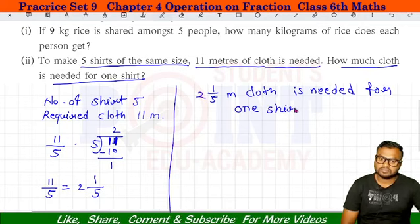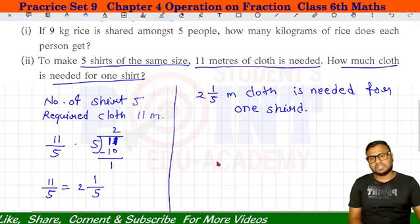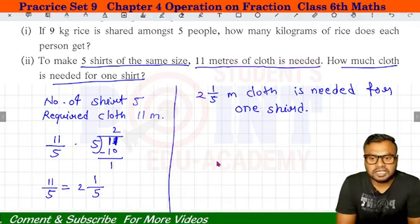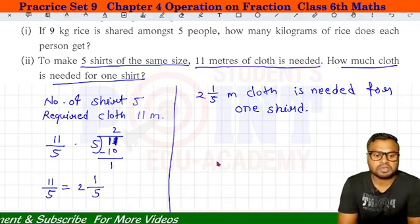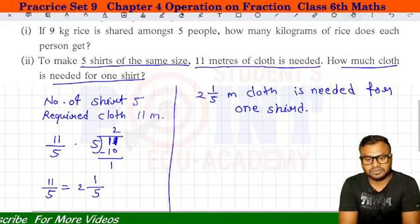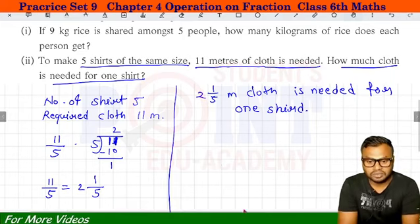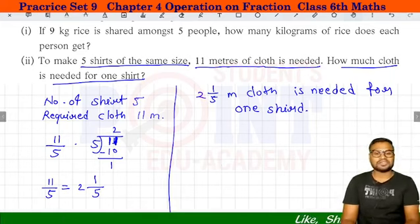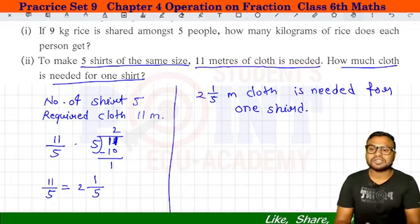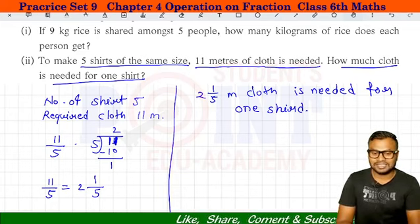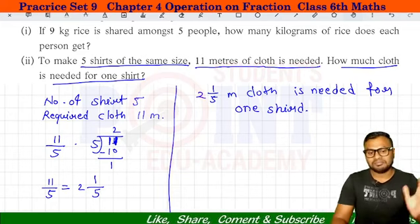Answer: 2 and 1 by 5 meter cloth is needed for one shirt। I hope यह question भी आपको समझ में आ चुका होगा। अगर video अच्छा लगा है तो like करो, channel subscribe करो। मिलते हैं अगली video में जिसमें हम करेंगे Practice Set 10। तब तक के लिए, bye bye।